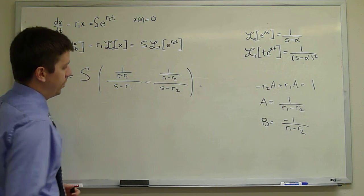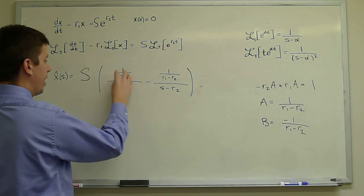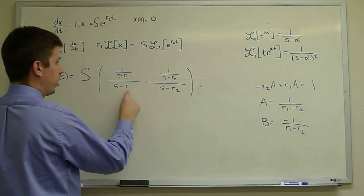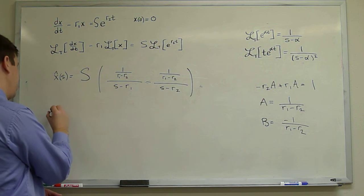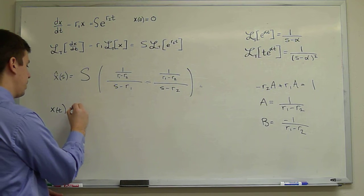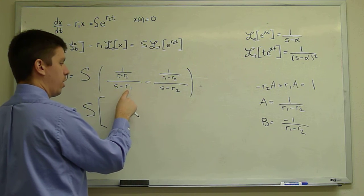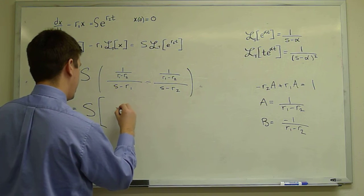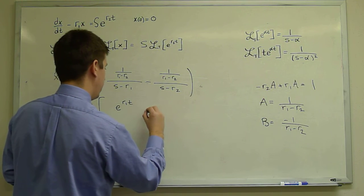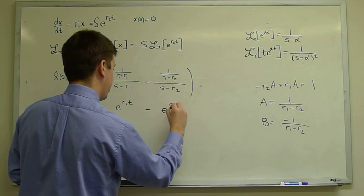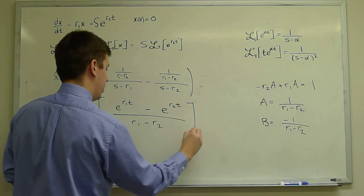The solution will instantly follow using the inverse Laplace transform. We have a constant times 1 over (S minus R1). Taking the inverse Laplace transform of both sides, on the left we get x(t), and on the right — using α equals R1 and α equals R2 respectively — we get capital S times (e^(R1·t) minus e^(R2·t)) over (R1 minus R2).